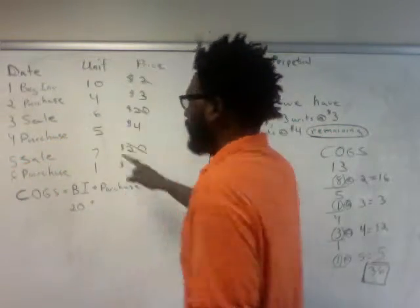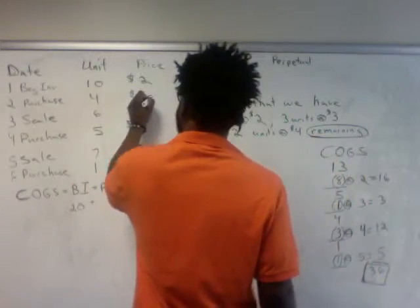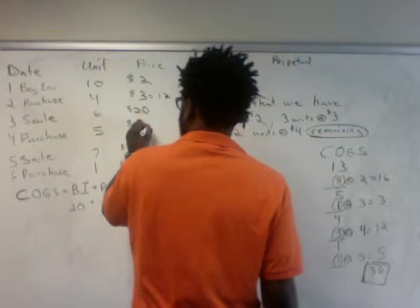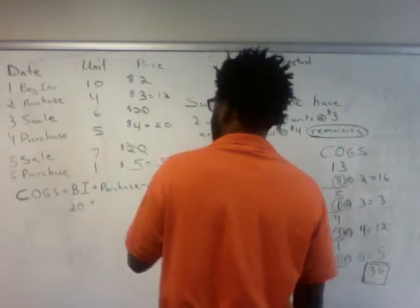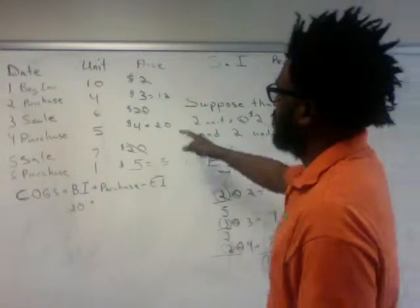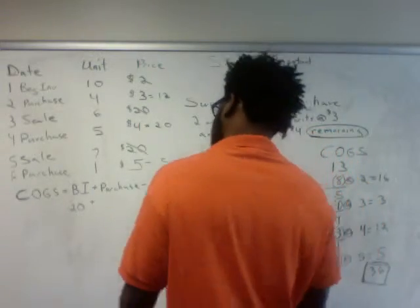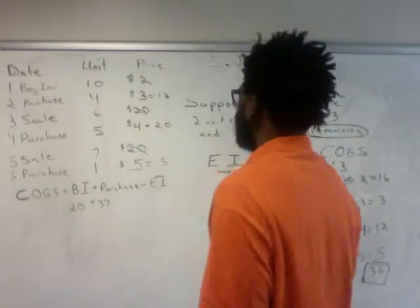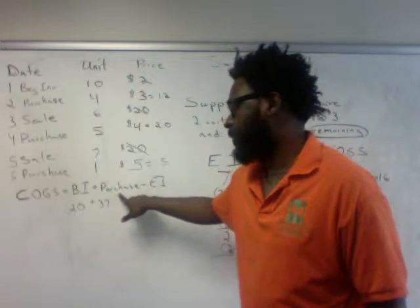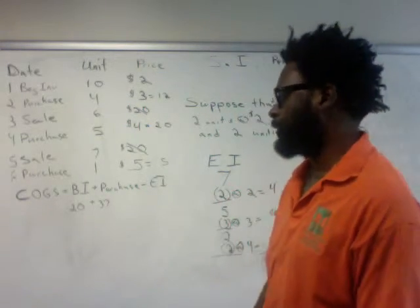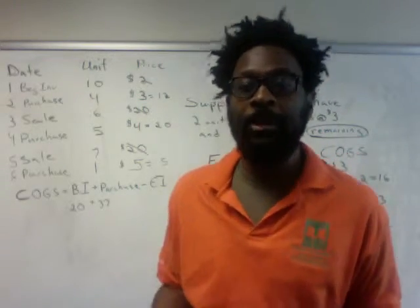Now we calculate the total cost of all purchases: 4 at $3 is $12, 5 at $4 is $20, and 1 at $5 is $5 — that's $37 total in purchases. So beginning inventory plus purchases equals $20 + $37 = $57, and that will never change regardless of what method you use.